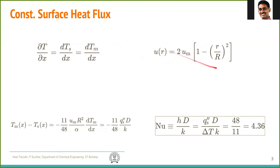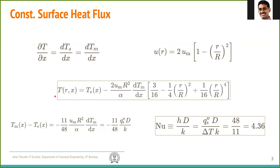Substituting both expressions, we obtain the temperature profile T in terms of the surface temperature and other terms. The surface temperature is a function of x only, and the other quantities are constants. The resulting profile is quartic in r — whereas the velocity profile was quadratic (r²), the temperature profile contains both r² and r⁴ terms. So we have exactly solved for the temperature profile in the fully developed region, which varies in both x and r.